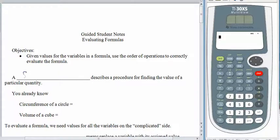A formula describes a procedure for finding the value of a particular quantity. For example, if I asked you about the circumference of a circle, you might tell me it's the distance around a circle, but to calculate it we would use the formula pi times the diameter. To calculate the volume of a cube, we would need the side length and then we would raise it to the third power, so we would cube the side length. These are formulas; it just tells you what to do to get the value that you want.